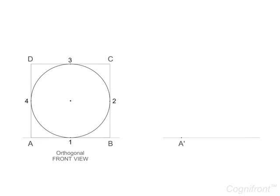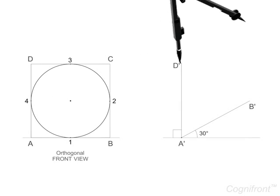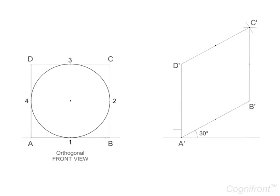To start the solution, mark a point A' on a reference line. In isometric view, the side A'-B' makes an angle of 30 degrees with the reference line while the side A'-D' is perpendicular to it. So draw these lines and complete the box accordingly. Mark the midpoints 1', 2', 3', 4'.